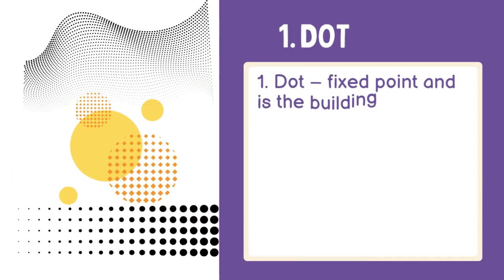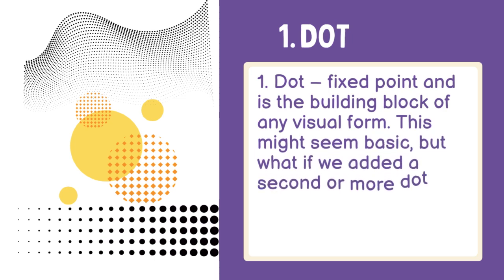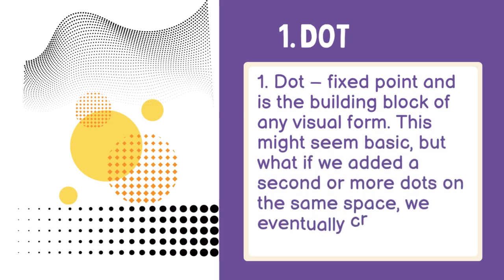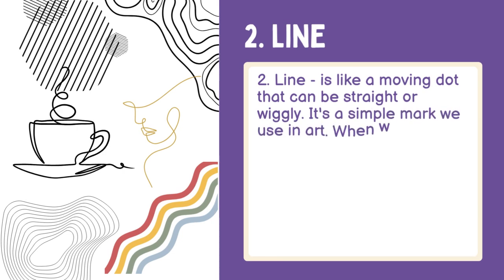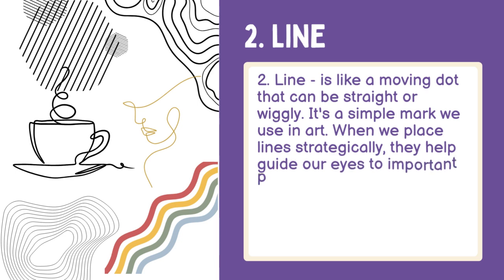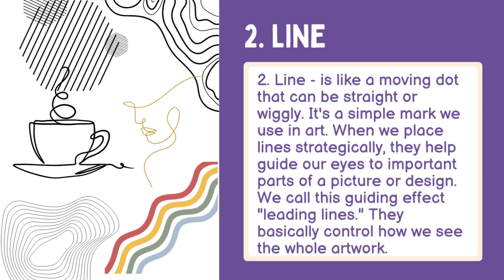Fixed Point: This might seem basic, but what if we added a second or more dots on the same space? We eventually create an abstract shape. Line: It's like a moving mark that can be straight or wiggly. It's a simple mark we use in art. When we place lines strategically, they help guide our eyes to important parts of a picture or design. We call this guiding effect leading lines — they basically control how we see the whole artwork.